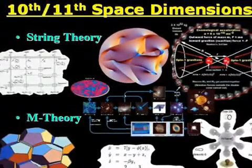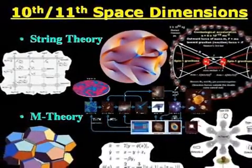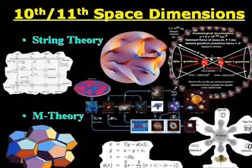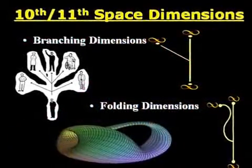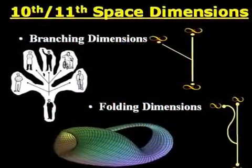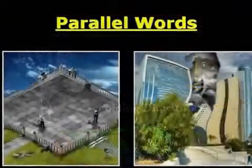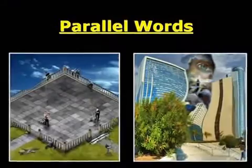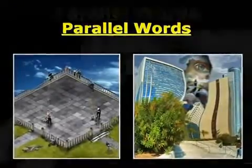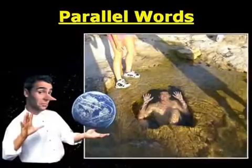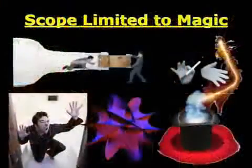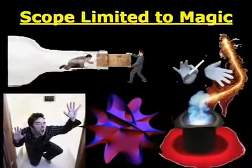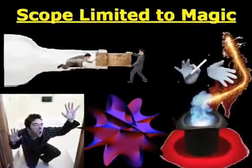I came across some interesting theories like string theory and M-theory that attempted to extend space dimensions up to the tenth or eleventh. Arguments like branching and folding dimensions to interface between so-called parallel worlds did not impress me. I find such arguments dishonest, making those theories illusionary — illusionary in the sense that the results are based on false facts. The scope of such theories does not go beyond entertainment, a show business like magic.